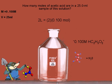2 liters of this solution contain 2 times 0.100 moles of acetic acid. 3 liters of this solution contains 3 times 0.100 moles of acetic acid.